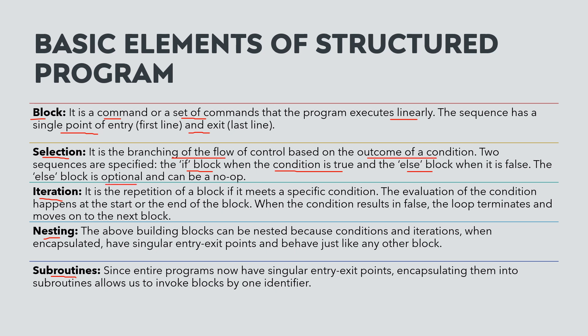Iteration is when we need to execute a block for a repeated number of times when a condition is met. The evaluation of the condition occurs at the start and end. When the condition is false, our loop will terminate and it will move on to the next block.